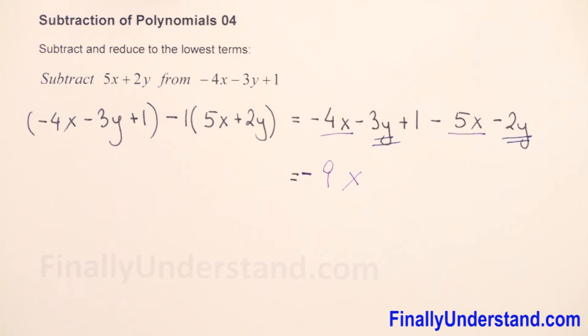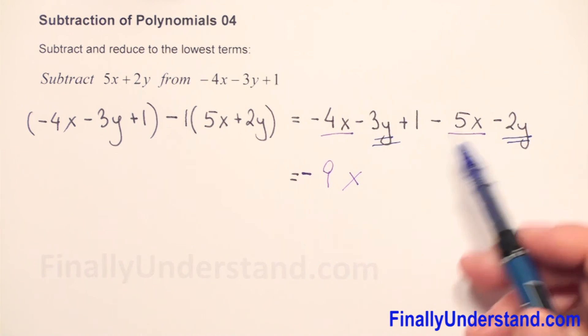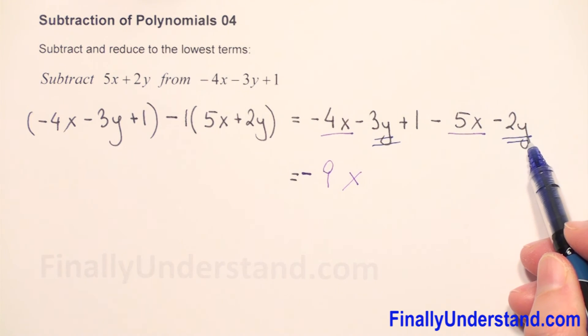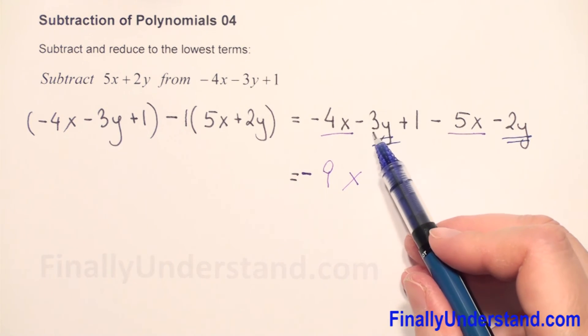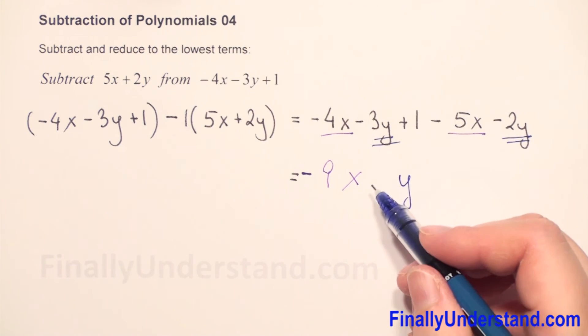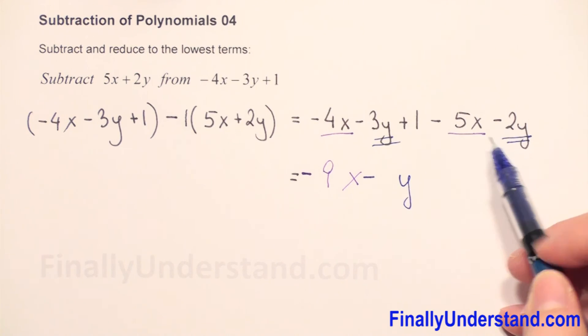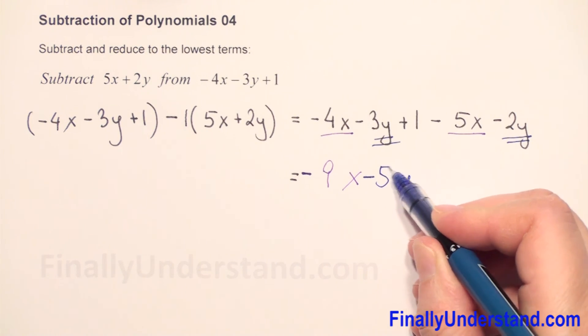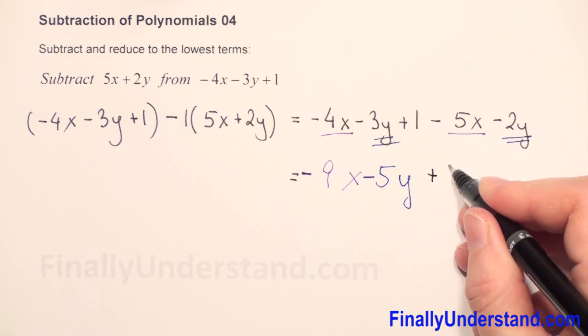Next we have negative 3y and negative 2y. We copy y, and because both coefficients are negative, we keep the negative sign and just add: 3 plus 2 is 5. And we have the constant plus 1.